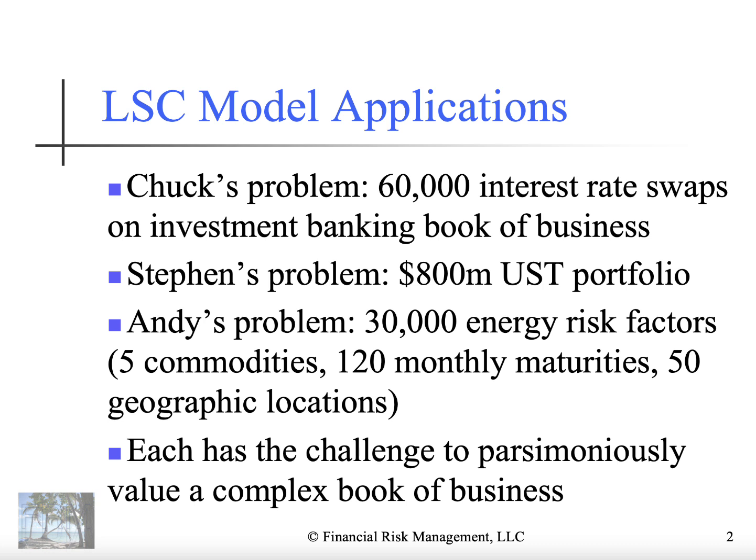The final example is Andy's problem. He worked in Houston at an energy company where he was responsible for risk management and traded in essentially five commodities. Each commodity had terms out to 10 years on a monthly reset basis, resulting in 120 different future contract maturities, and they traded in about 50 geographic locations each. Multiplying five commodities times 120 monthly maturities times 50 geographic locations results in about 30,000 risk factors. Clearly, without some way to introduce parsimony, you're not going to be able to interpret the risk of your book of business.